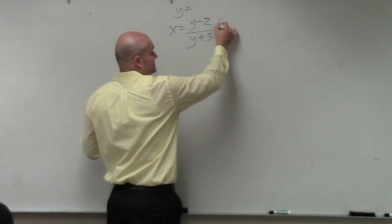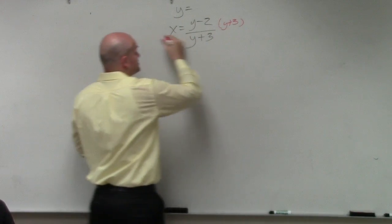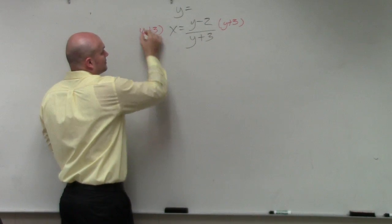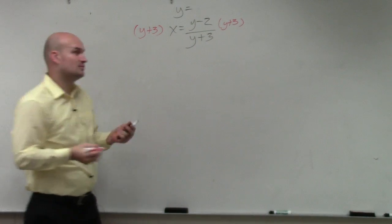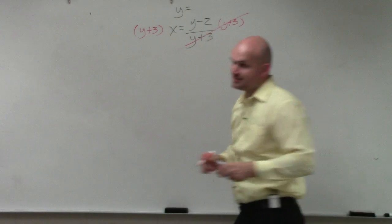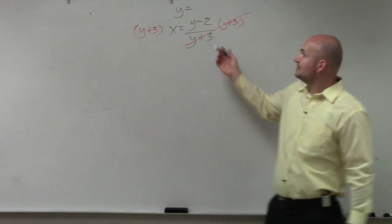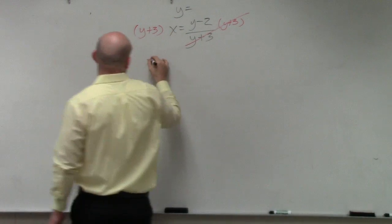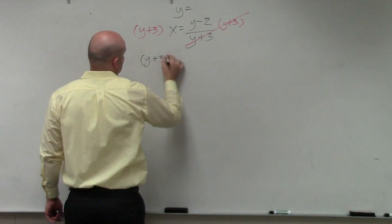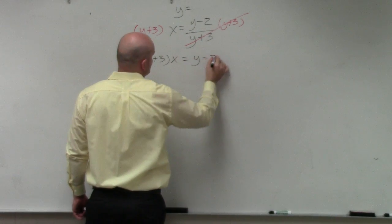So to get that off the denominator, I'm going to multiply by y plus 3 on both sides. OK, the reason why I do that? Because that cancels the denominator using the division property. Now I have a y.